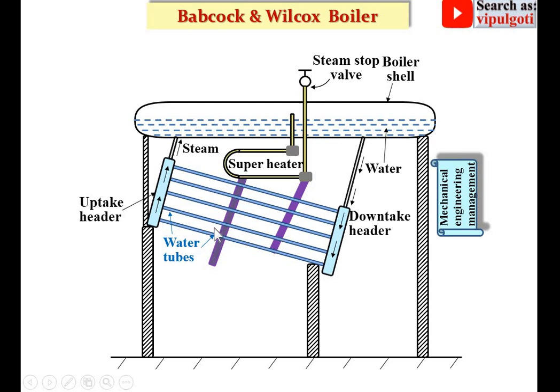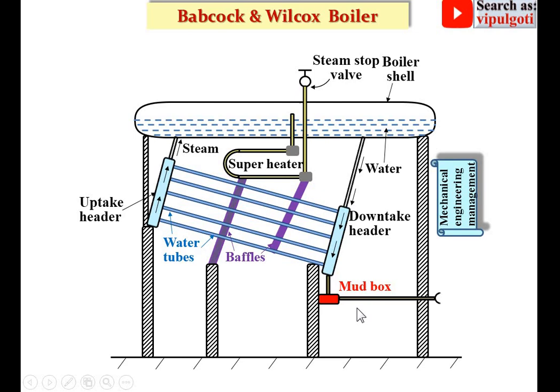These are known as the baffles — one type of restriction. That is also supported by the frame, and the lowest portion of the downtake header is connected by a tube that is once again connected to the mud box. The red color indicates the mud box. This is the tube and this is the blow-off cock, so the mud is discharged with the help of the blow-off cock from the boiler.